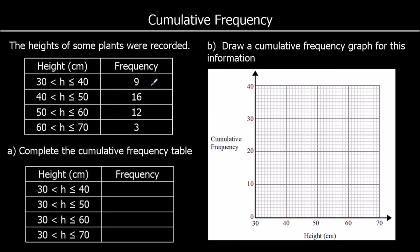In a cumulative frequency table, the first group will be the same: 30 to 40 centimetres, so the frequency is 9. Then the second group — you'll notice a difference — this is 30 to 50 centimetres now, so this is the first two added together: the 30 to 40 group and the 40 to 50 group. So 9 plus 16 is 25. There are 25 plants with a height between 30 and 50 centimetres. Now we add on the next group — add on the 12 — 25 and 12 make 37. So there are 37 plants with a height between 30 and 60 centimetres.